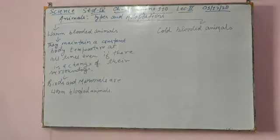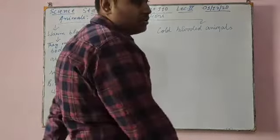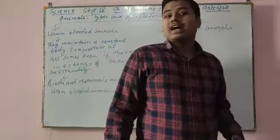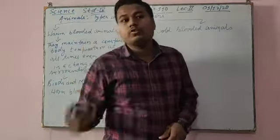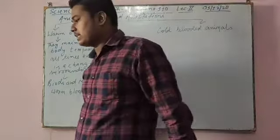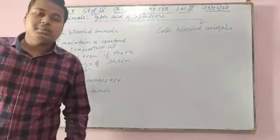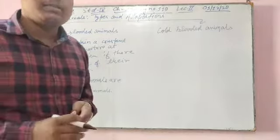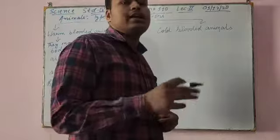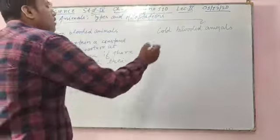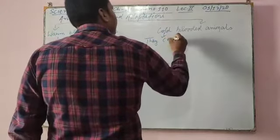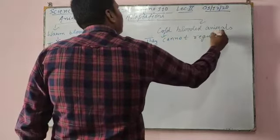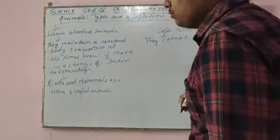Now we move to cold-blooded animals. Cold-blooded animals cannot regulate their body temperature, and hence it changes according to the temperature of their surroundings. If you have seen reptiles like salamanders or lizards, they change their body color according to their surroundings. So cold-blooded animals cannot maintain their body temperature.